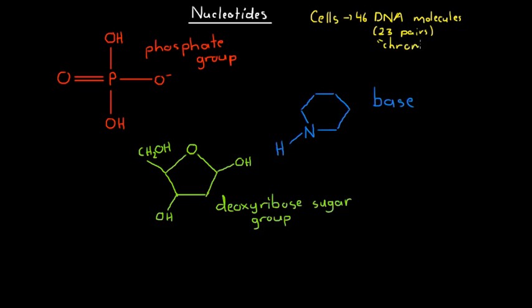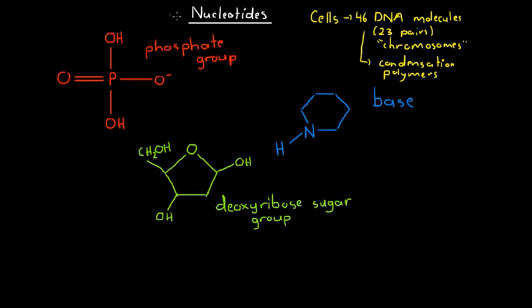These DNA molecules are in fact condensation polymers of little things that we call nucleotides. So each cell in our body has 46 DNA molecules, or 46 chromosomes, and these DNA molecules are condensation polymers of nucleotides.